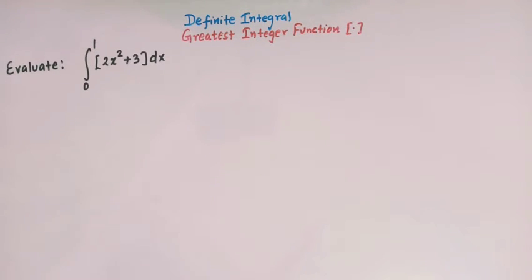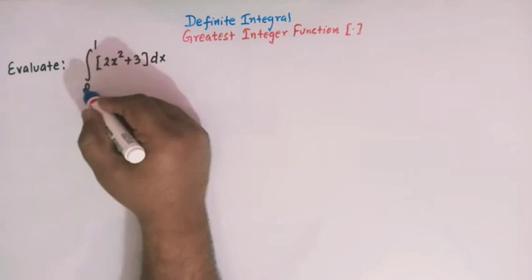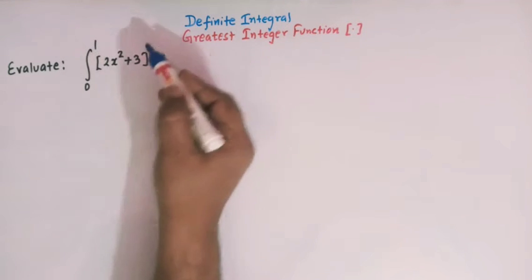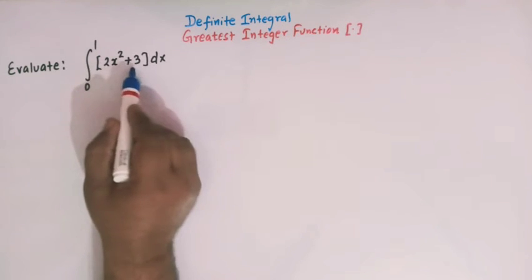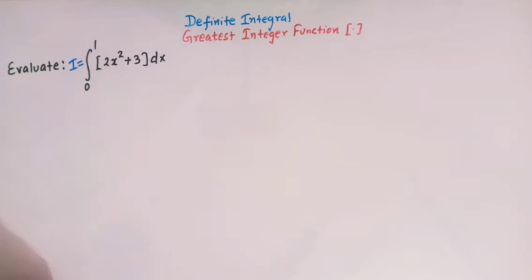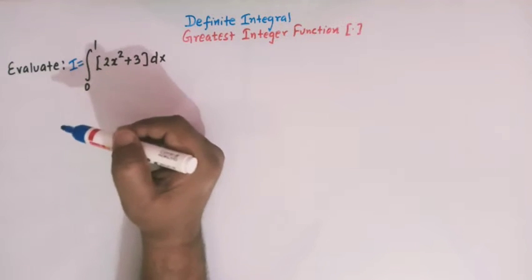Hello viewers. In today's class we are going to discuss yet another important and very conceptual problem from definite integrals involving the greatest integer function. In mathematics, the greatest integer function plays a very vital role. Here we have to find the value of the definite integral from 0 to 1 of the greatest integer of 2x² + 3. Let us start and call this integral I.